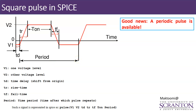The waveform also has a time period — after what time it repeats. It goes from one cycle start to the next, making it a periodic pulse. The source can be either a voltage or a current.